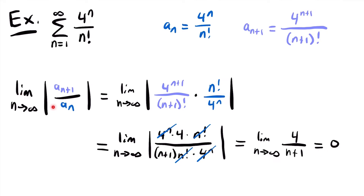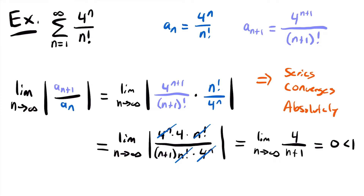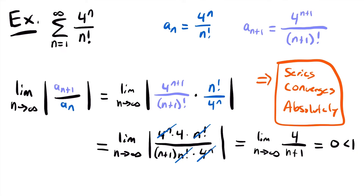The limit of the ratio a sub n plus 1 over a sub n equals 0, which is less than 1. By the ratio test, our series converges absolutely. When your limit is less than 1, that is the conclusion you can make — the series converges absolutely.